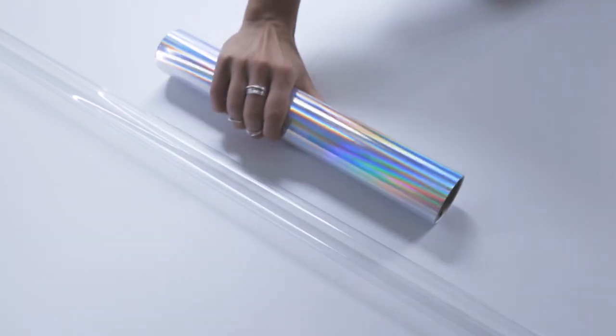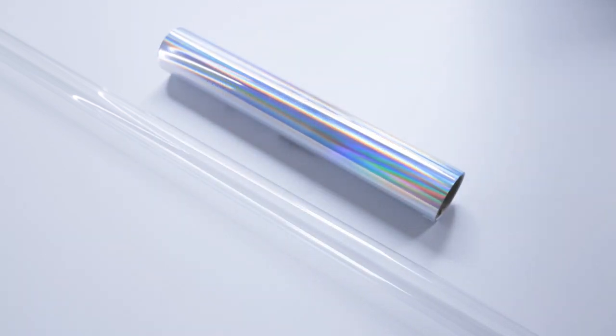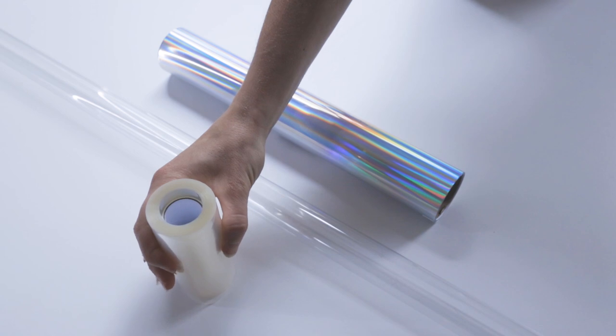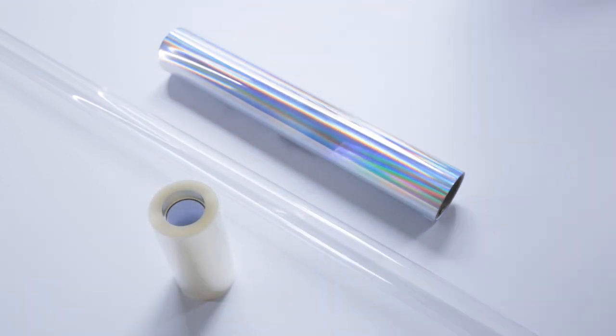One T8 clear tube, an adhesive rainbow vinyl roll, one roll of 10 centimeters wide cake color, a pair of scissors, and transparent tape.